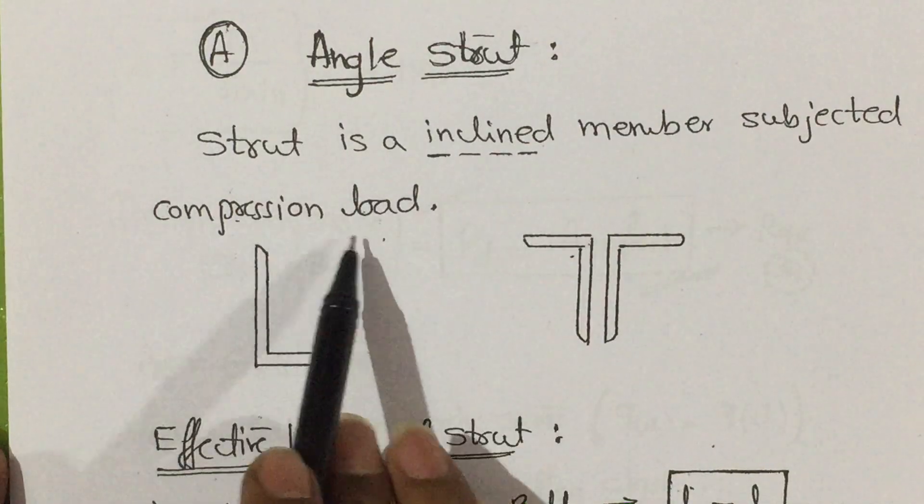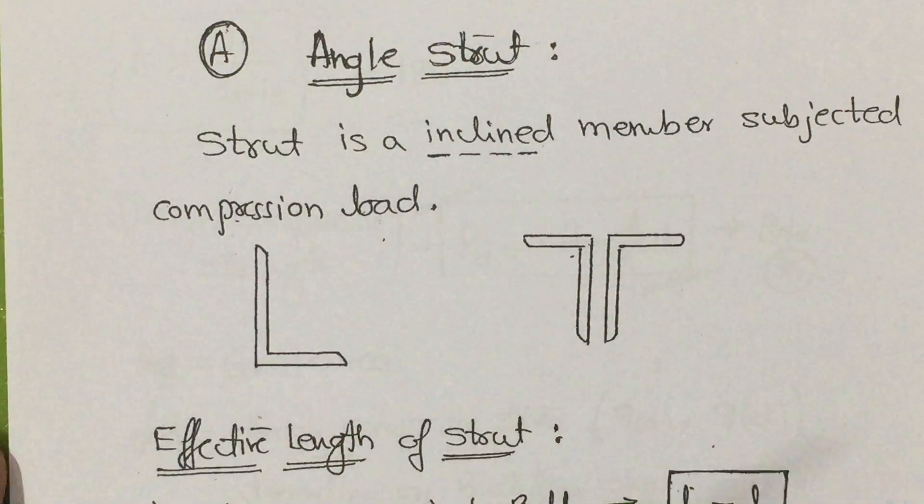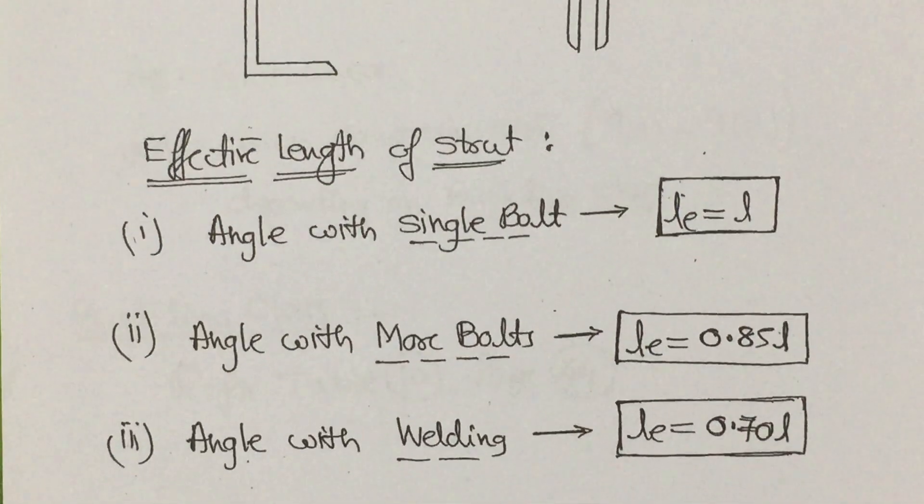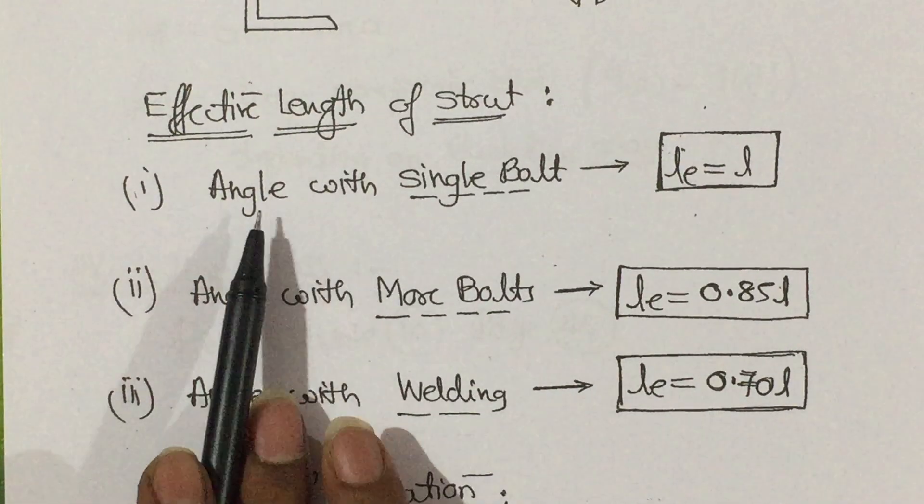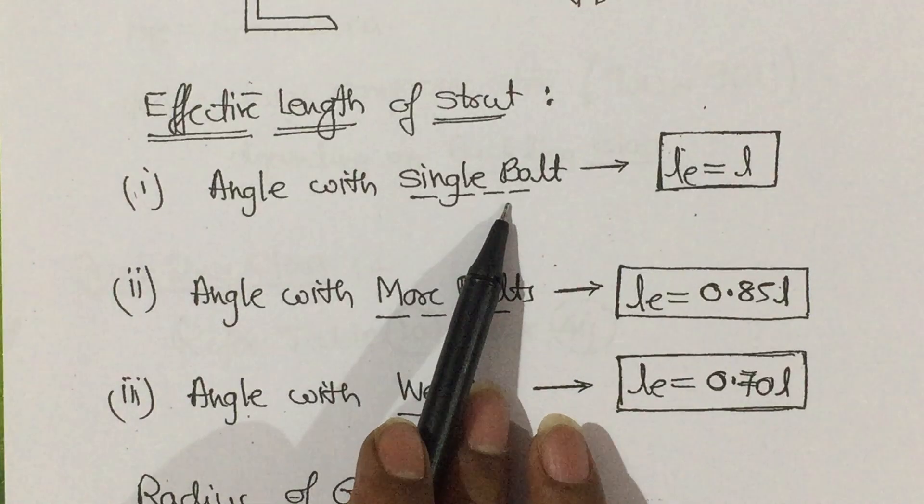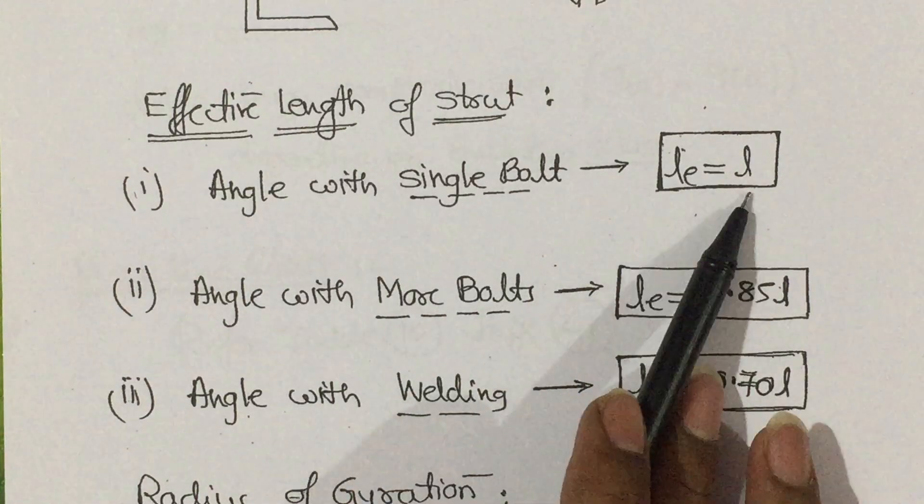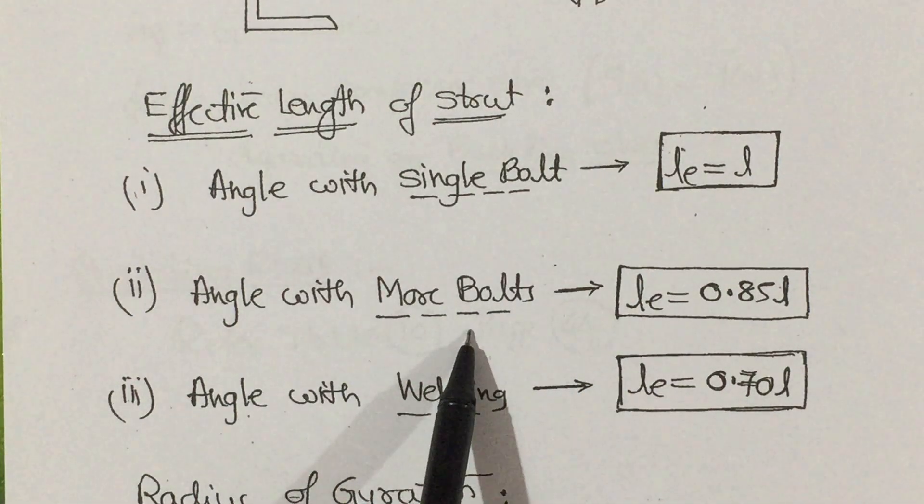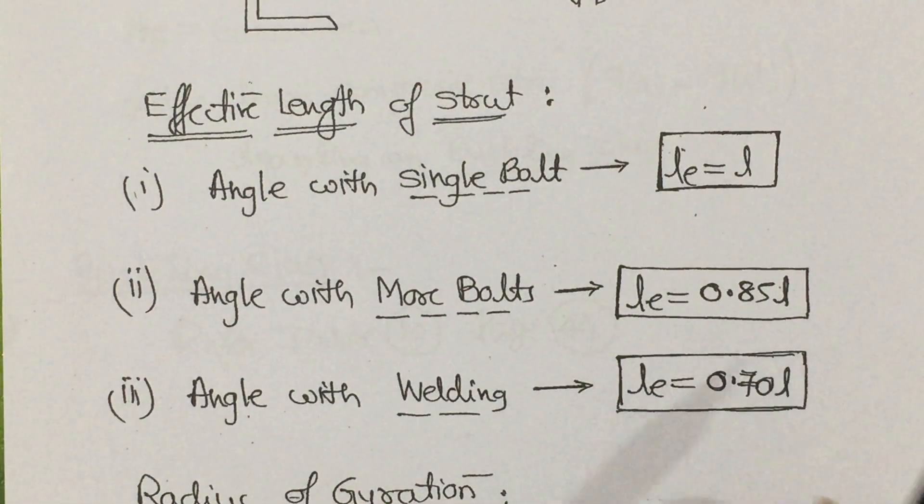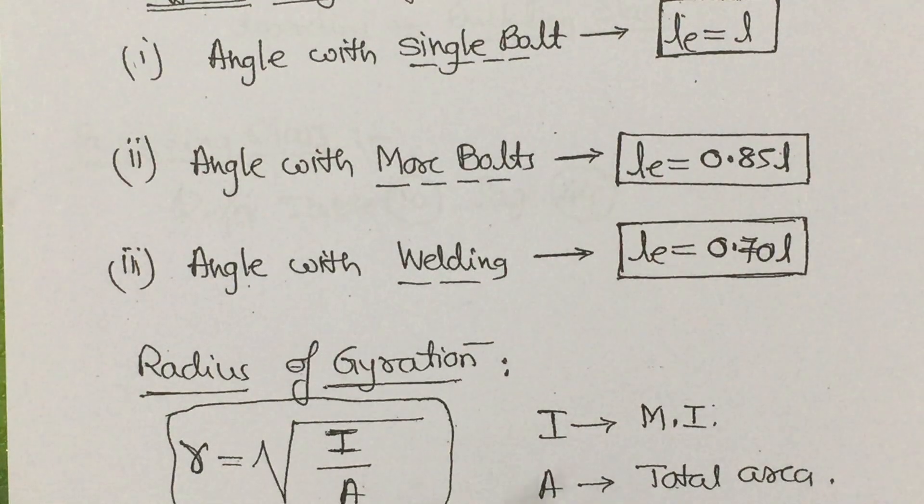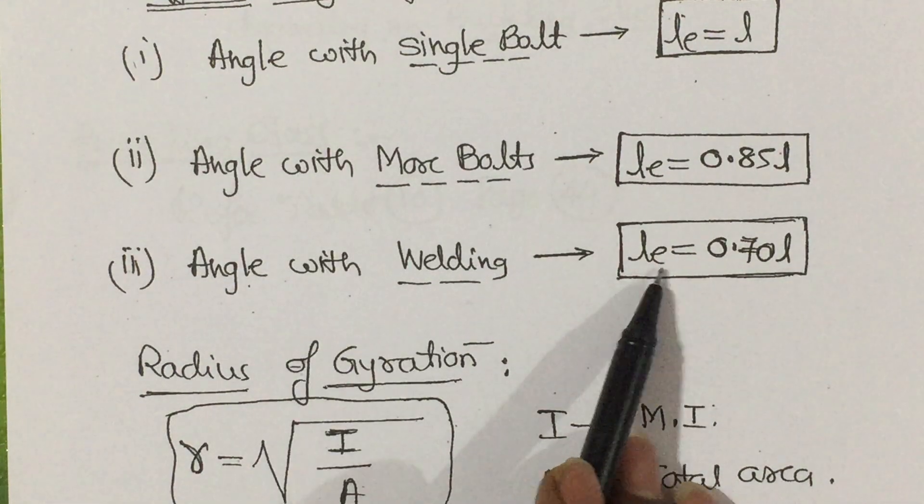If you come to the effective length of the strut: angle with single bolt section, effective length is equal to l. Angle with more number of bolts, effective length is equal to 0.85 times l. Angle with welding, we come across effective length equal to 0.7 times l.